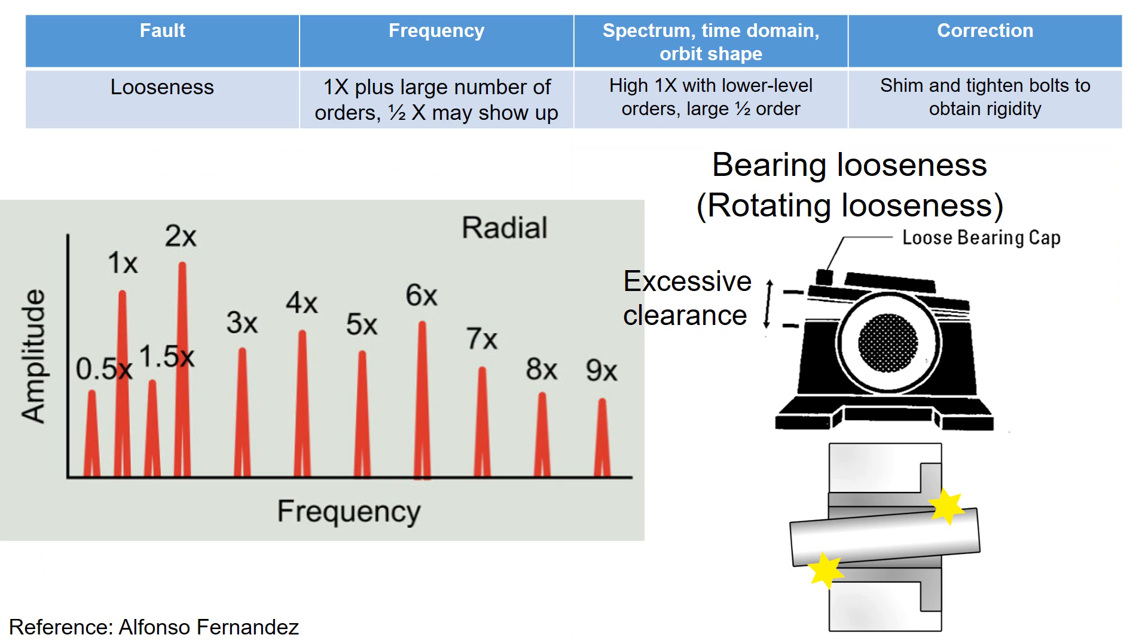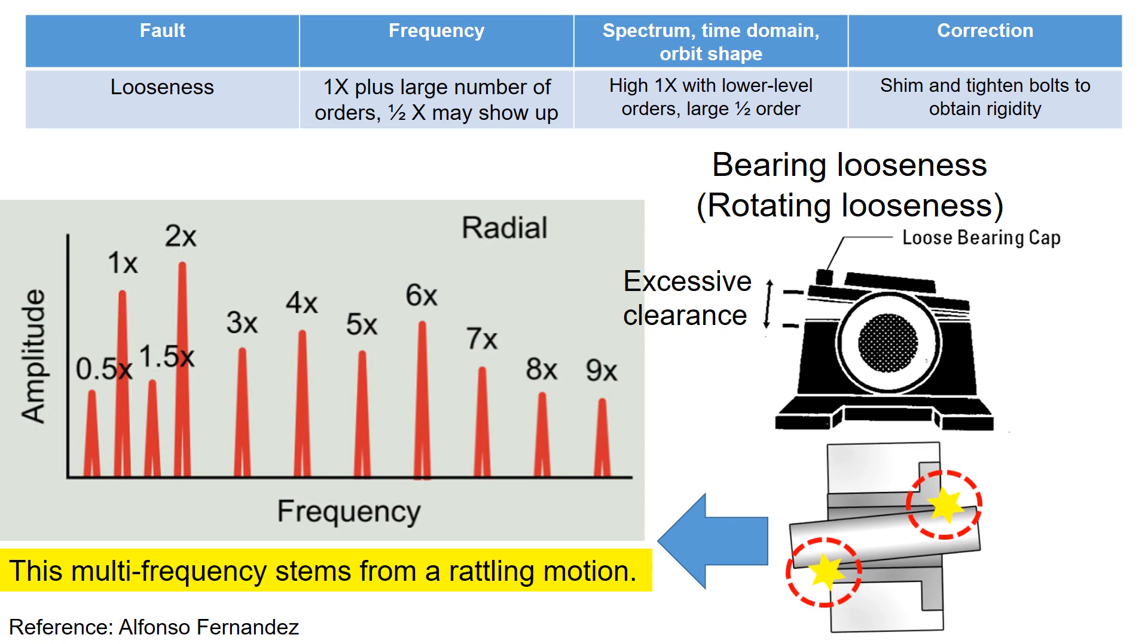Bearing looseness or rotational looseness can generate high order frequencies including 1x, 2x, 3x, and beyond. This multi-frequency stems from a rattling motion.